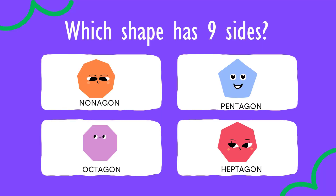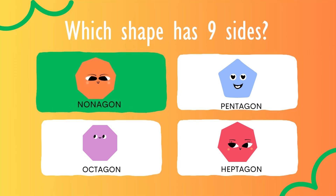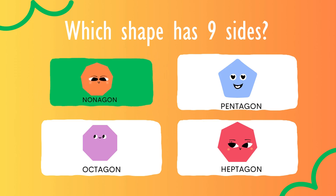Which shape has nine sides? Nonagon. Nonagon has nine sides.